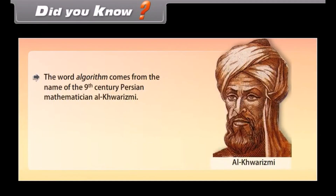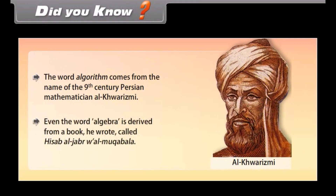Did you know? The word 'algorithm' comes from the name of the ninth-century Persian mathematician Al-Khwarizmi. Even the word 'algebra' is derived from a book he wrote called 'Hisaab al-Jabra wa al-Muqawala'.